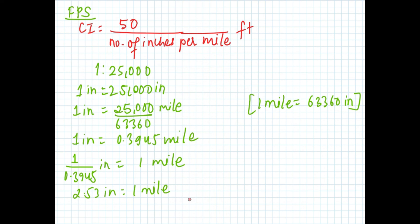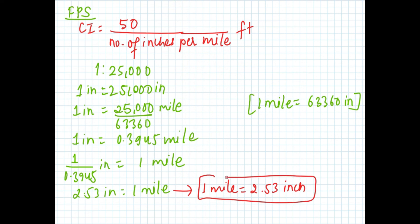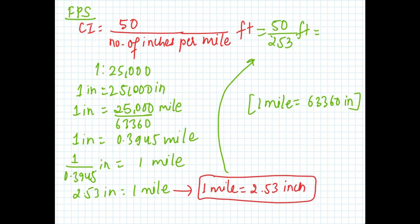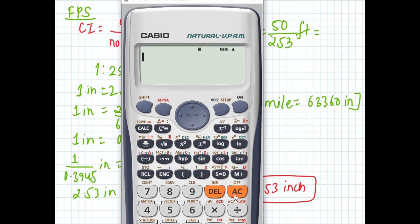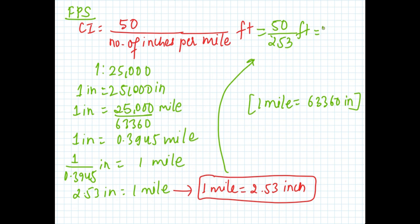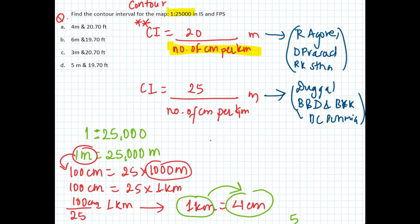So 1 mile equals 2.53 inches. Putting this into the FPS formula: CI equals 50 divided by 2.53, which gives 19.76 feet. So the answer is 5 meters and 19.76 feet, which corresponds to option D. Thank you for watching.